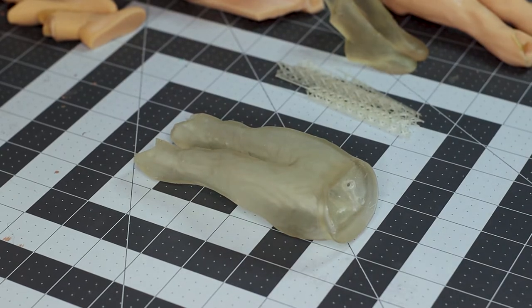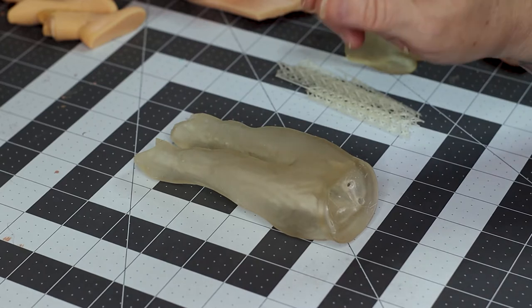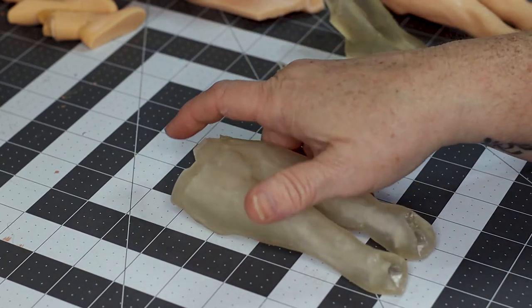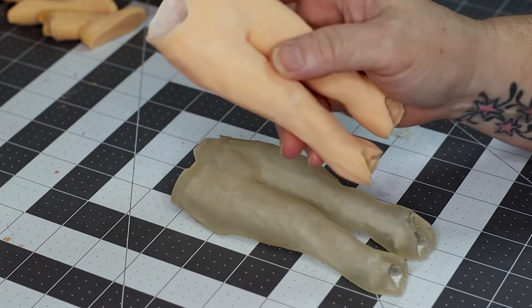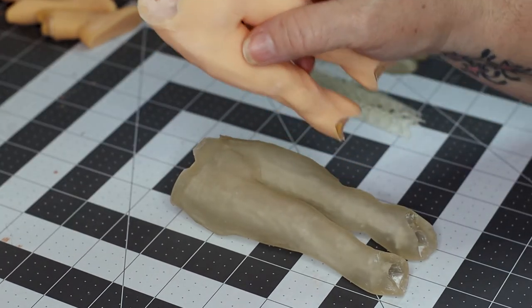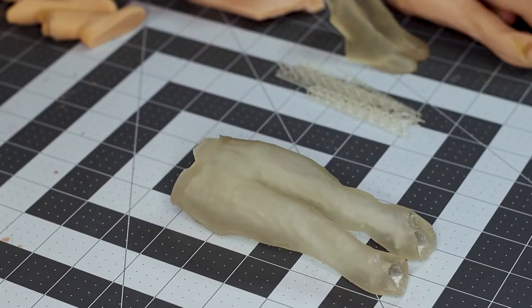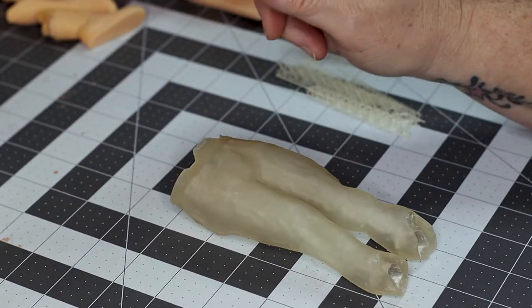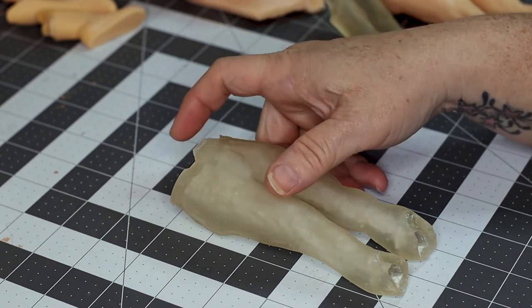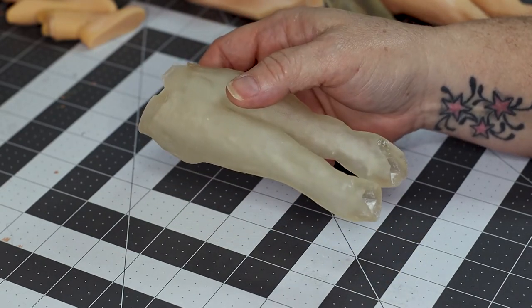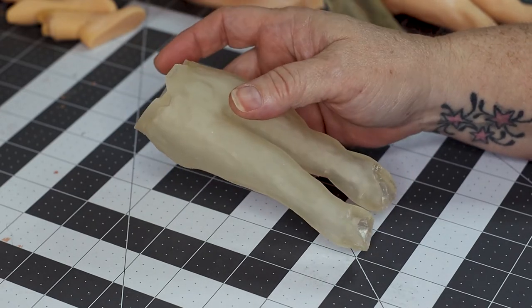Hey guys, so I had to reprint the Vision legs because I dropped him and broke off part of the belt. Yeah, so I ran out of the skin resin, so I printed it in clear. And I thought since I printed it in clear, I would show you guys how I cure the inside of my prints.